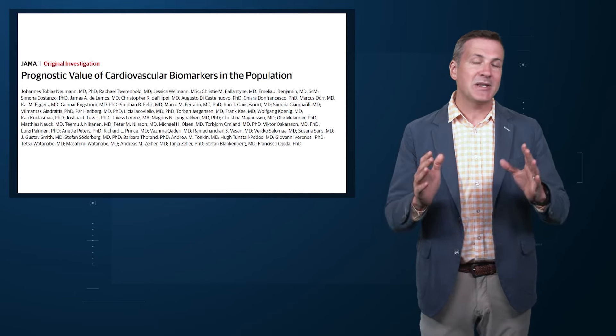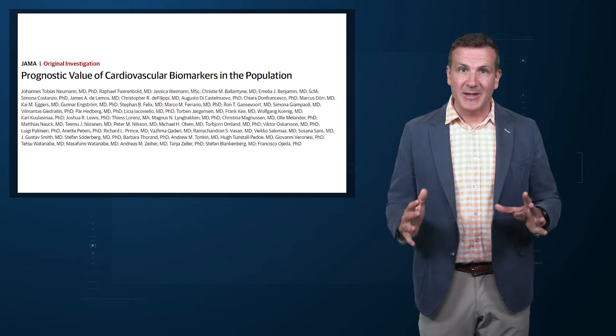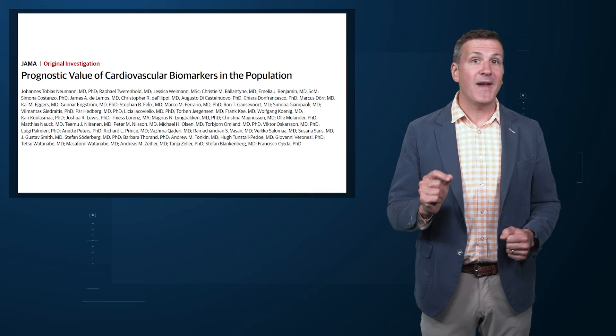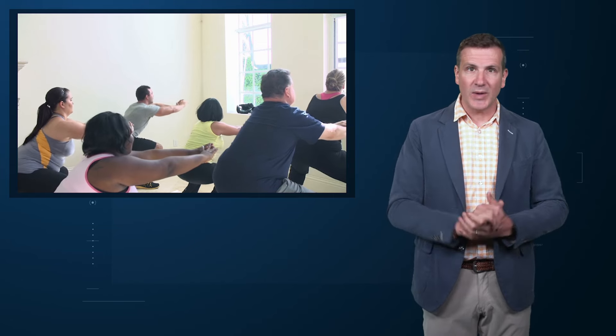Why have I spent so much time trying to reverse our intuition that strength of association and strength of predictive power must be related? Because it helps to explain this paper appearing this week in JAMA — a very nice piece of work trying to help us better predict cardiovascular disease. Cardiovascular disease is the number one killer in this country and most of the world. We have really good preventative therapies and lifestyle interventions that can reduce the risk, but it would be nice to know in whom, specifically, we should use those interventions.